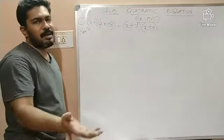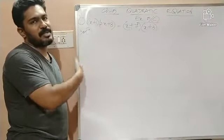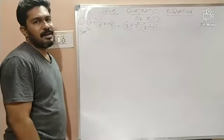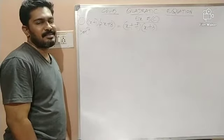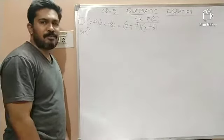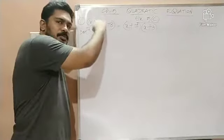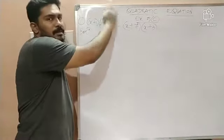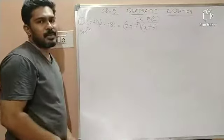As usual we have to convert this given equation into the general format which is ax²+bx+c=0. So for that what we need to do, we need to simplify both the sides of the given equation.